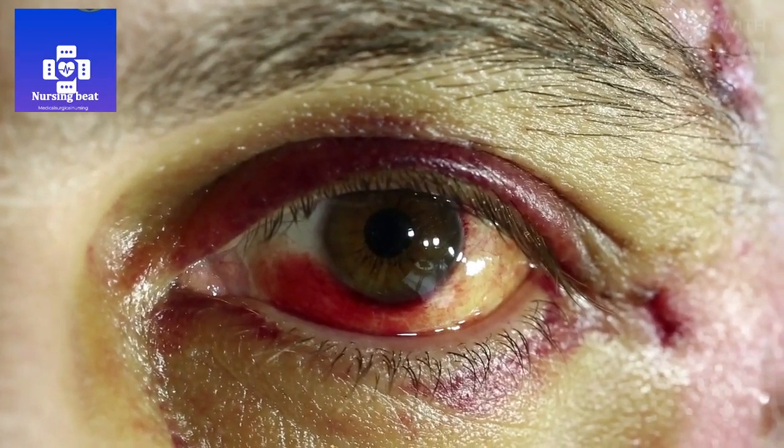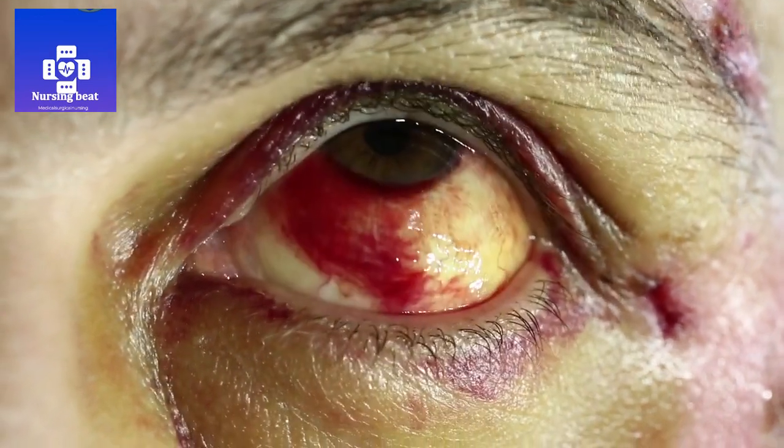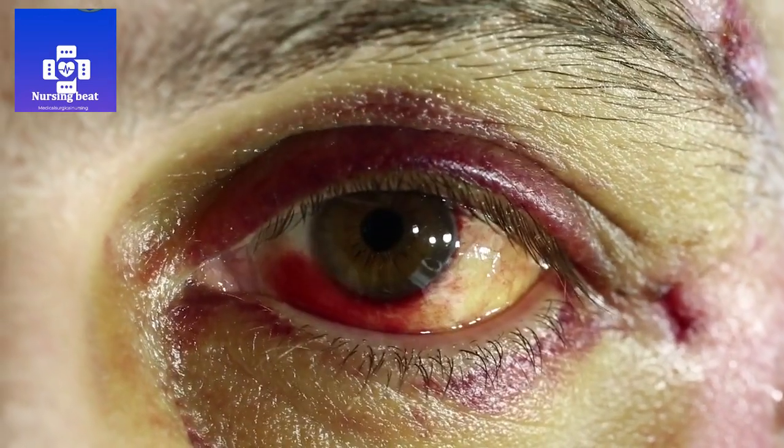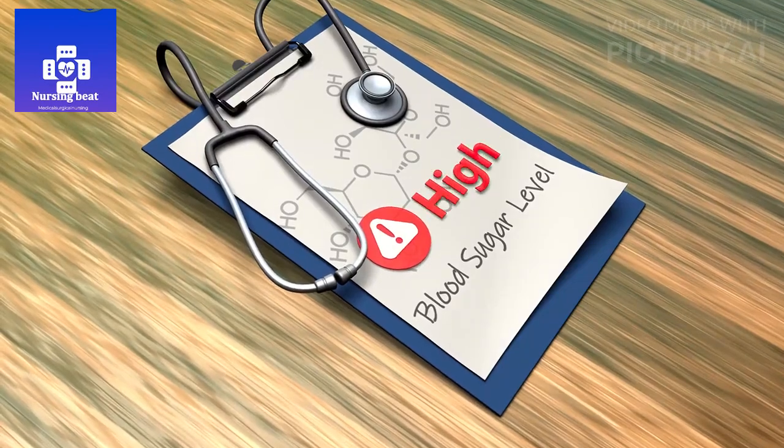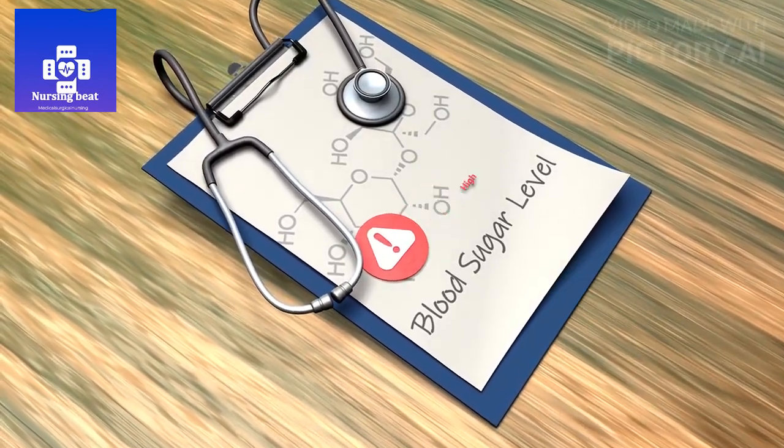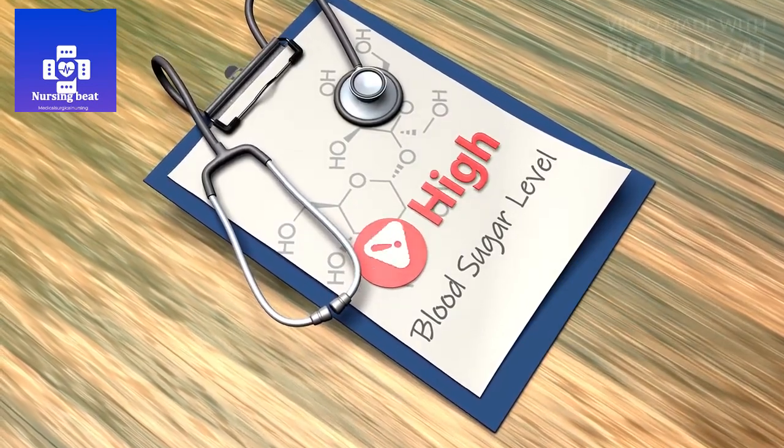Causes: diabetic retinopathy is primarily caused by prolonged high blood sugar levels, hyperglycemia, associated with diabetes. Over time, the elevated blood sugar damages the blood vessels in the retina, leading to various stages of retinopathy.